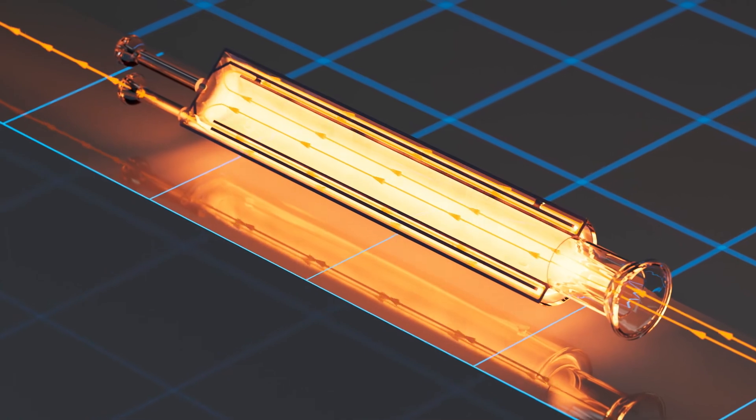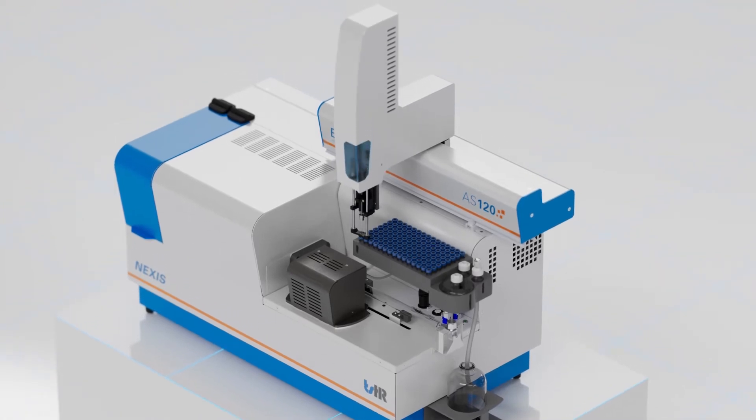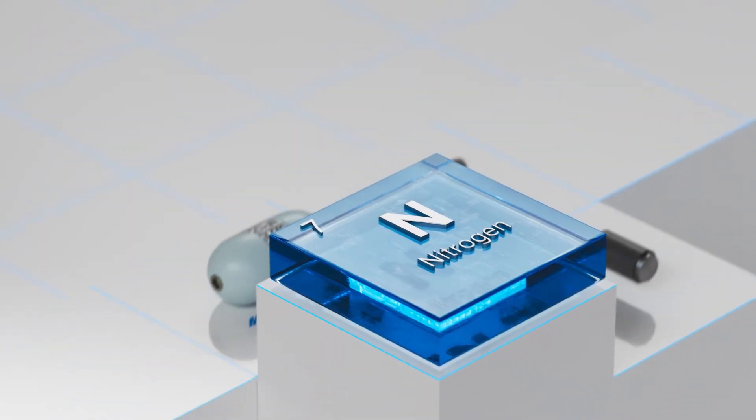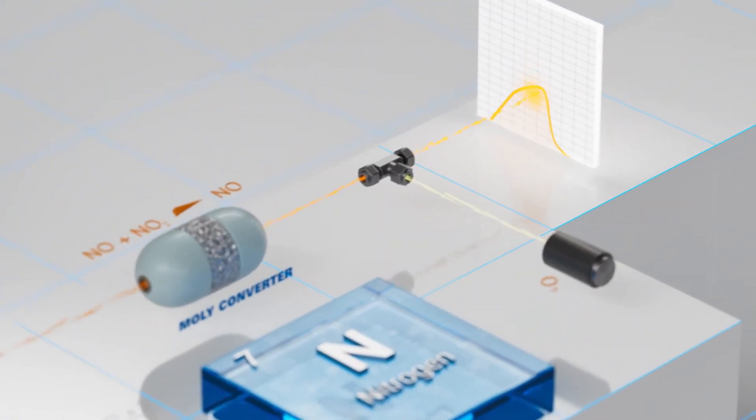This helps maintain compliance with even the most stringent reporting requirements. The Nexus also uses an AC power supply that can better maintain consistent furnace temperatures and increase uptime. For total nitrogen analysis, the Nexus features a moly converter which delivers unsurpassed low-level nitrogen detection.